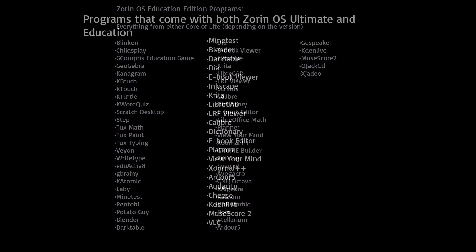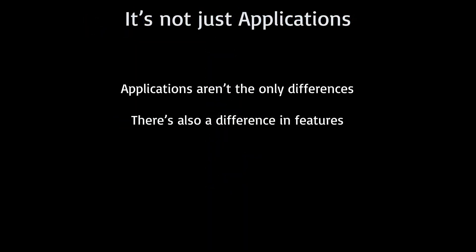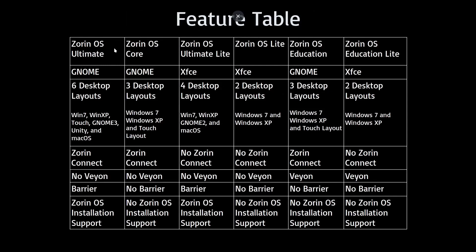Applications aren't the only differences — there's also a difference in features. Keep in mind that Zorin OS Ultimate is $40. Zorin OS Ultimate, Core, and Education all use the GNOME desktop, while Ultimate Lite, Lite, and Education Lite all use the XFCE desktop.